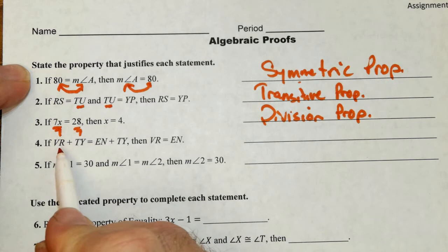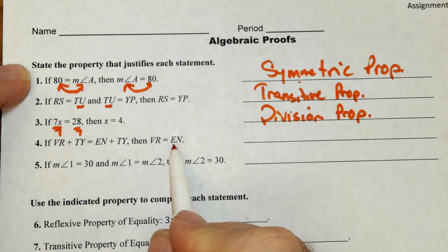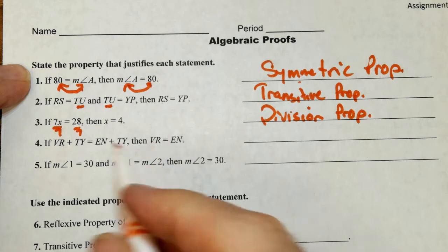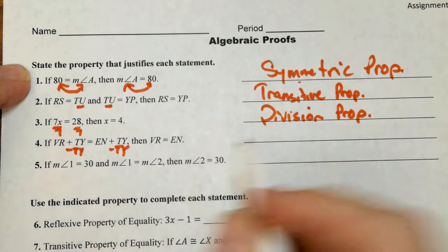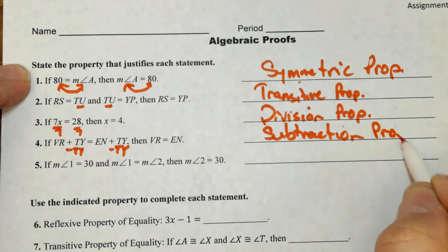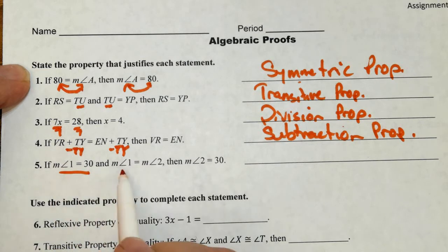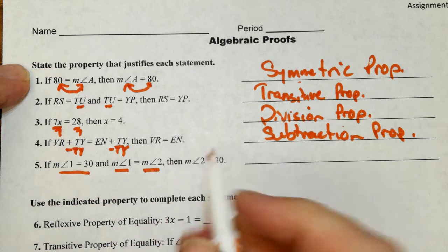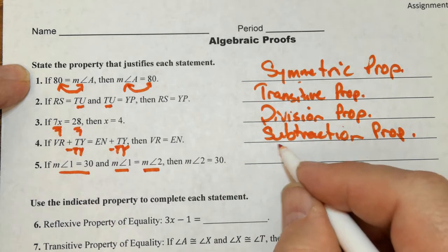This one is VR plus TY. Now those are distances equal EN plus TY. And we're left with distances VR and EN. If the measure of angle 1 equals 30 and the measure of angle 1 is equal to the measure of angle 2, well then the measure of angle 2 must be equal to 30. So what did we do? We just did substitution property there.